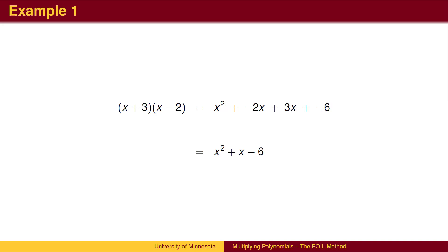This is often called the FOIL method. We multiply the first terms, the outside terms, the inside terms, and the last terms. We then combine like terms at the end.